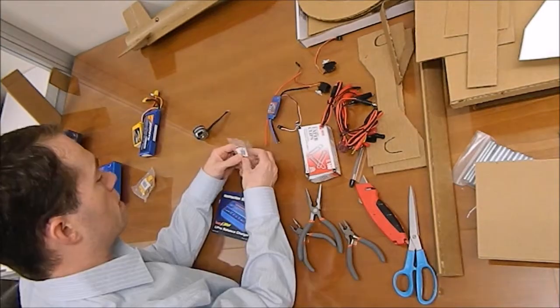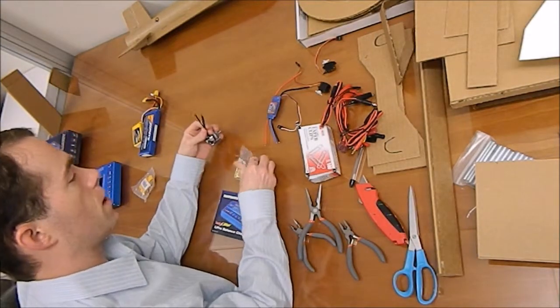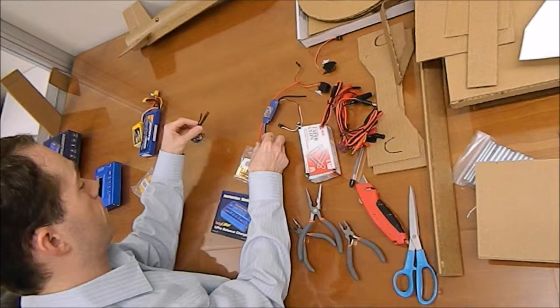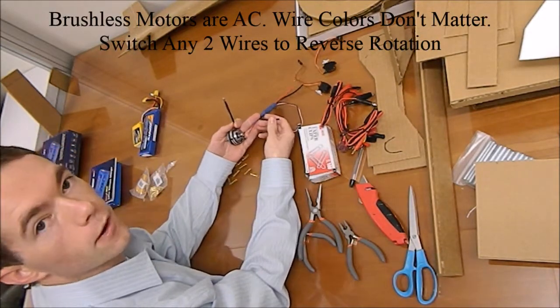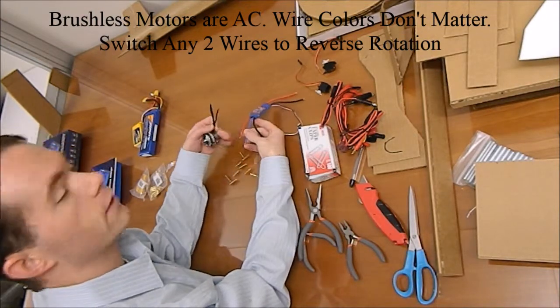What I'm going to do first, put some of these connectors on my motor here and on my speed controller. I've got three wires coming out of my motor. I've got three wires coming out of my speed controller. Obviously it connects that way.